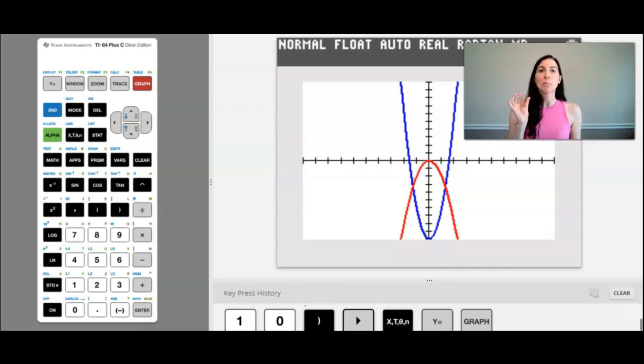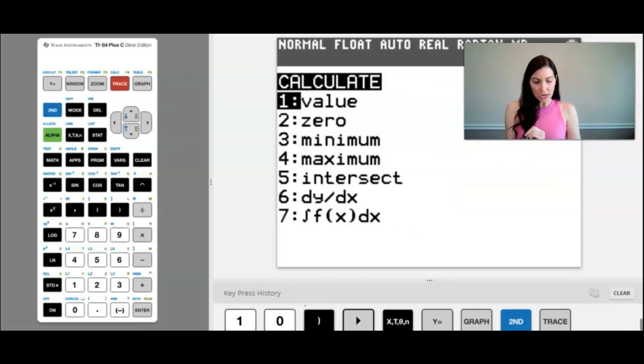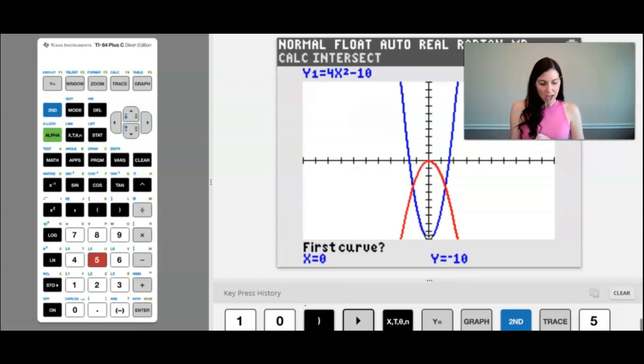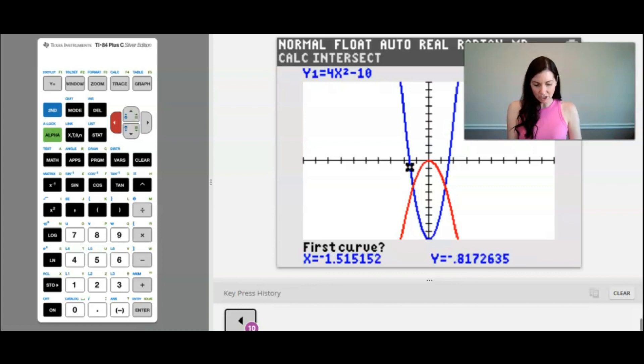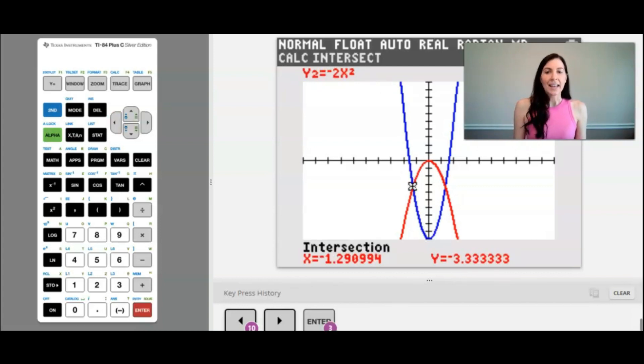The first thing we need to find is the points of intersection. As I mentioned we're going to be using the calculator for this. Since I'm using the calculator I need to first find the intersection points. So I'm going to press second trace and go down to number five and I'm going to find the intersection point here on the left first and I can see that it's an x value of -1.290994. Keep that number in mind.